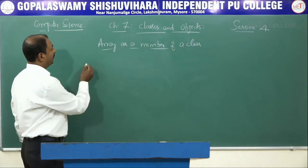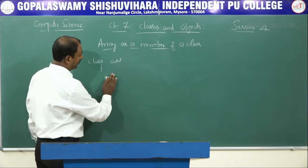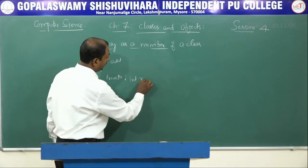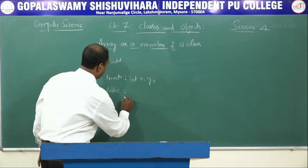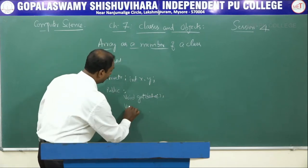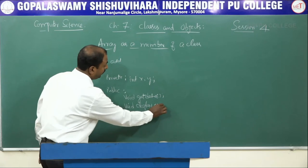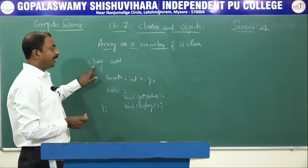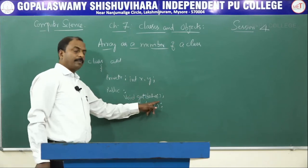Students, you know how to define a class. For example, if I say class 'add', under private we have data variables int x, y, and under public we have void getdata and void display, and we close the class with a semicolon. The class name is 'add', x and y are data members, and getdata and display are member methods or functions.